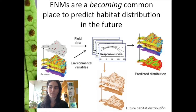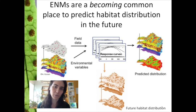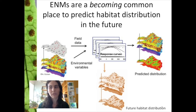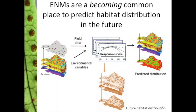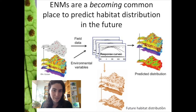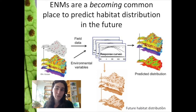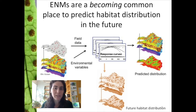Recently this approach has also been applied to evaluate the habitat distribution of species in the future. Instead of projecting the response curve to current environmental conditions, the environmental layers used are now climatic scenarios for the future — commonly 2050 or 2030. At this stage in the course, you may have noticed that most models are focused on the climatic niche of the species.